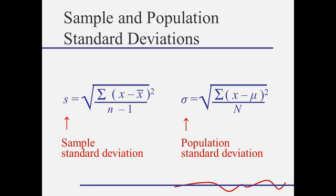Once we've computed the variance, it's easy to compute the standard deviation because it's the square root of the variance. Notice that the symbol for the sample standard deviation is our letter s, and the symbol for the population standard deviation is a Greek letter sigma, that's a lowercase sigma.